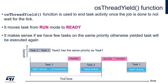Task 1 is executing its code and finishes before the tick time, so it calls osThreadYield. osThreadYield triggers the PendSV software interrupt to switch context from Task 1 to the next task from the ready list — in this case Task 2. Task 2 starts executing and is then interrupted by SysTick when the tick time elapses. SysTick then calls PendSV again, selecting the next task from the ready list.